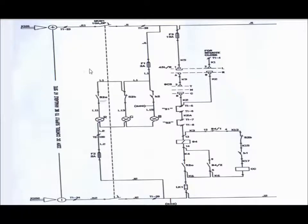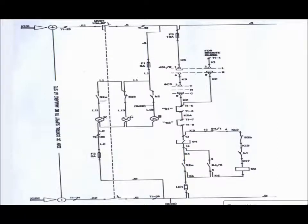Terminal numbers 23 and 24 have been allotted for DC1, that is for closing as well as for TC1, that is trip coil 1. There is one MCB of double pole type, 10 ampere rating, given in the closing path at the source end of the DC positive.